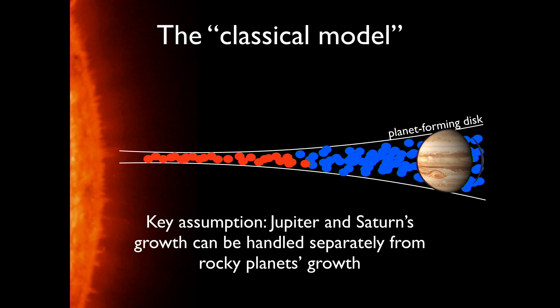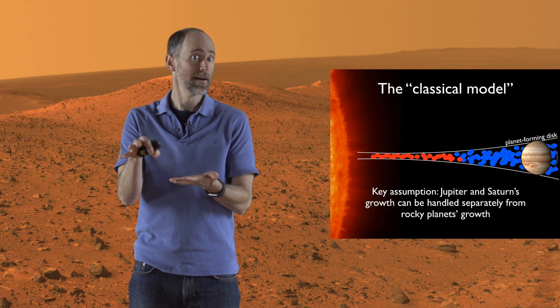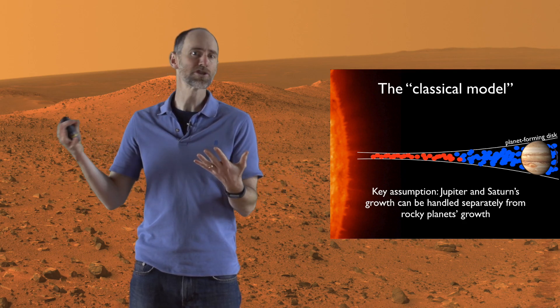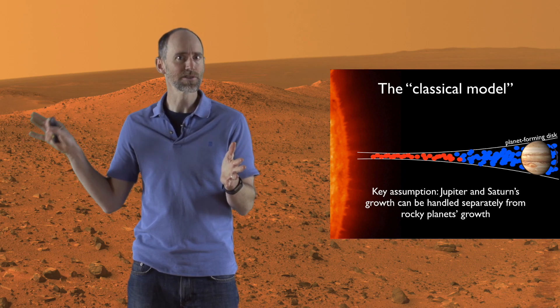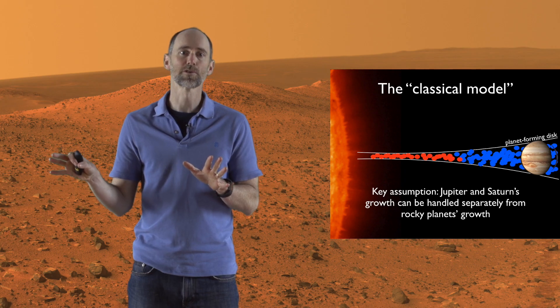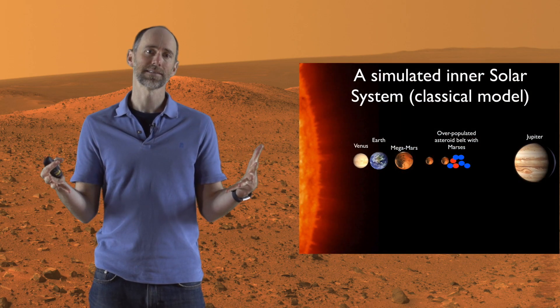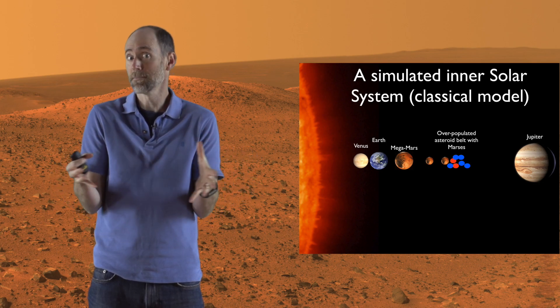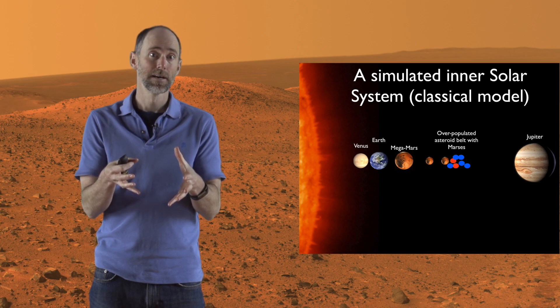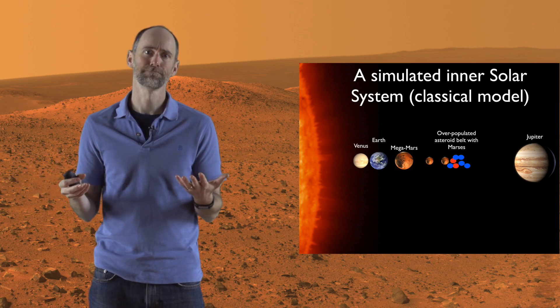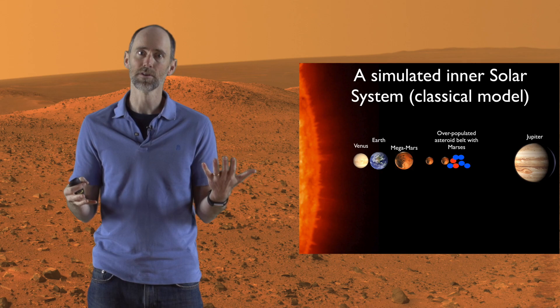The simplest model to explain the inner solar system is called the classical model. It makes the simple assumption that we can treat the formation of the gas giant planets — Jupiter and Saturn — separately from the formation of the terrestrial planets. We know the gas giant planets formed fast while there was still gas in the disk, and that gas only lasted a few million years, whereas Earth's formation took 50 or 100 million years to complete. When you do computer simulations of the classical model, we form planetary systems where Venus and Earth look pretty good, but Mars is way too massive — typically the mass of Earth instead of one-tenth the mass of Earth, which is what the real Mars is. The asteroid belts often have Mars stranded in there.